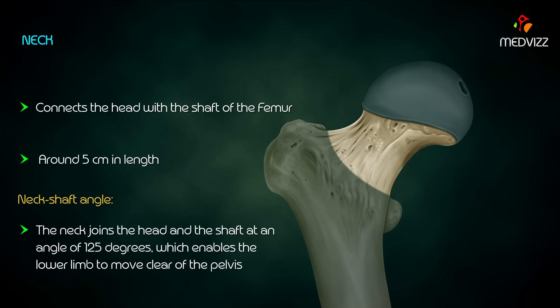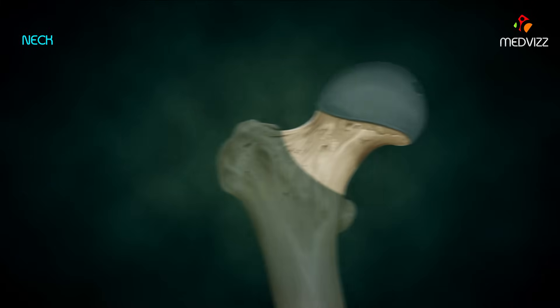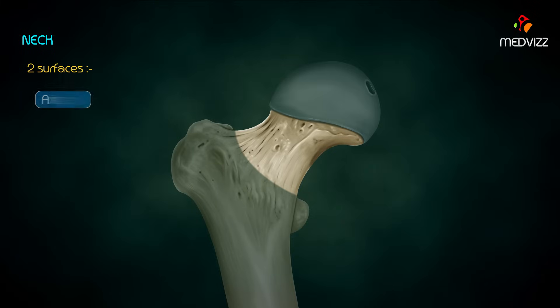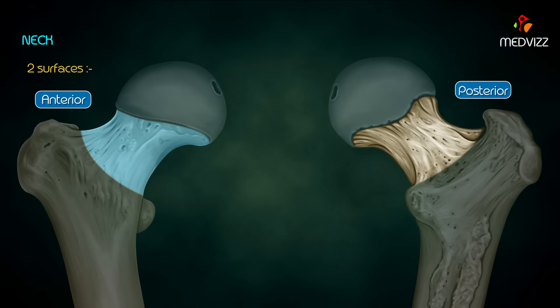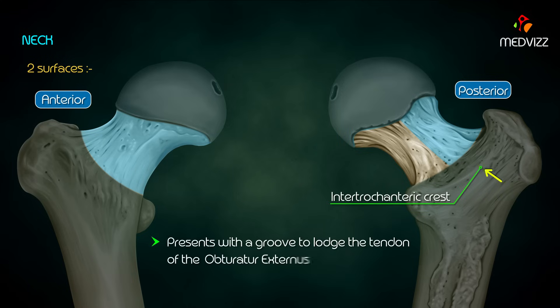The neck-shaft angle: the neck joins the head and the shaft at an angle of 125 degrees, which enables the lower limb to move clear of the pelvis. The neck has two surfaces: the anterior surface, which is intracapsular and meets the shaft at the intertrochanteric line; and the posterior surface, where the capsule extends till the medial half of the neck and meets the shaft at the intertrochanteric crest.